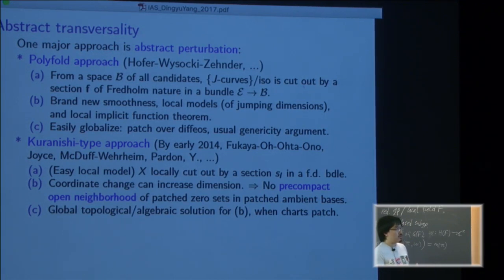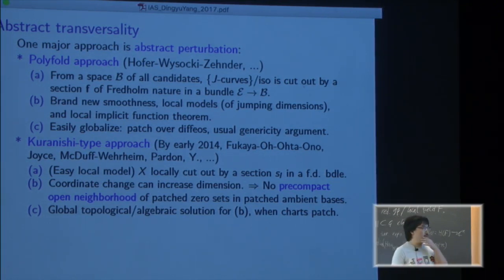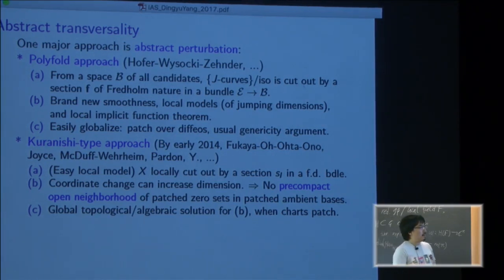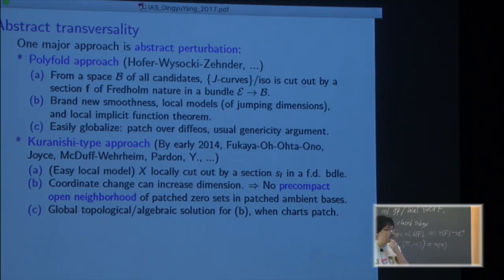There's also finding a mission approach, Kuranishi type introduced by Fukaya-Ono, and there are several groups independently trying to make the subtle theory complete, clarify various things. So locally the model is easy - just cut out by a section in the local finite dimensional bundle, so basically space is locally an intersection of two functions. Coordinate change is more involved - the target can be a bigger dimension, so if you patch the set together there's no pre-compact open neighborhood of the zero set patched together inside the ambient space. That creates a lot of problems and usually there's some global solution to it.